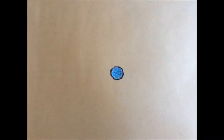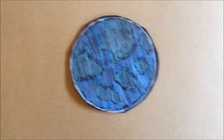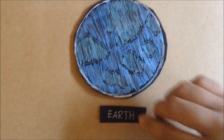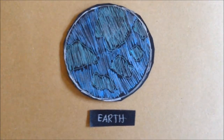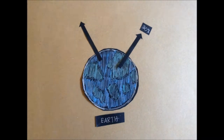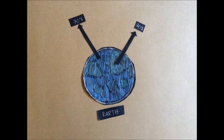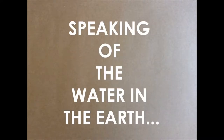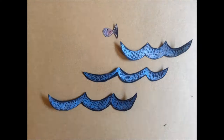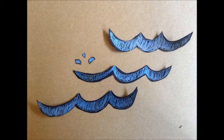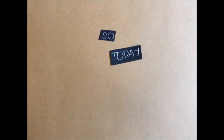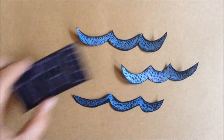This little green and blue planet is where we live right now. It is named Earth. Our planet is 30% land and 70% water. Speaking of water in the Earth, there are a lot of fascinating and mysterious things in the sea. So today, we are going to talk about the sea.